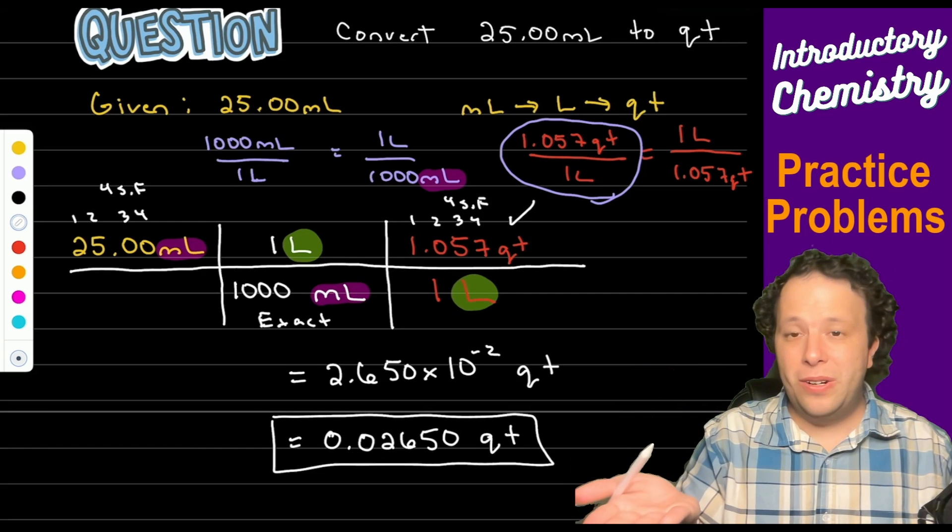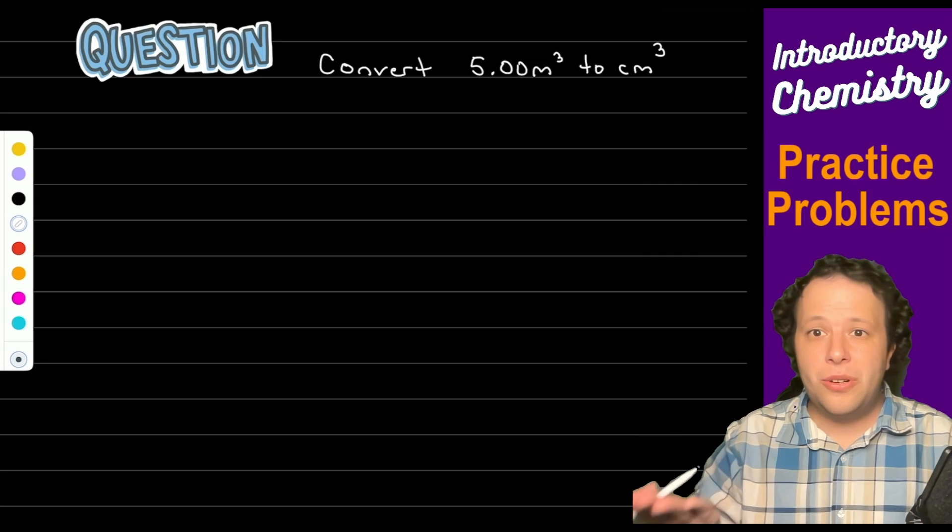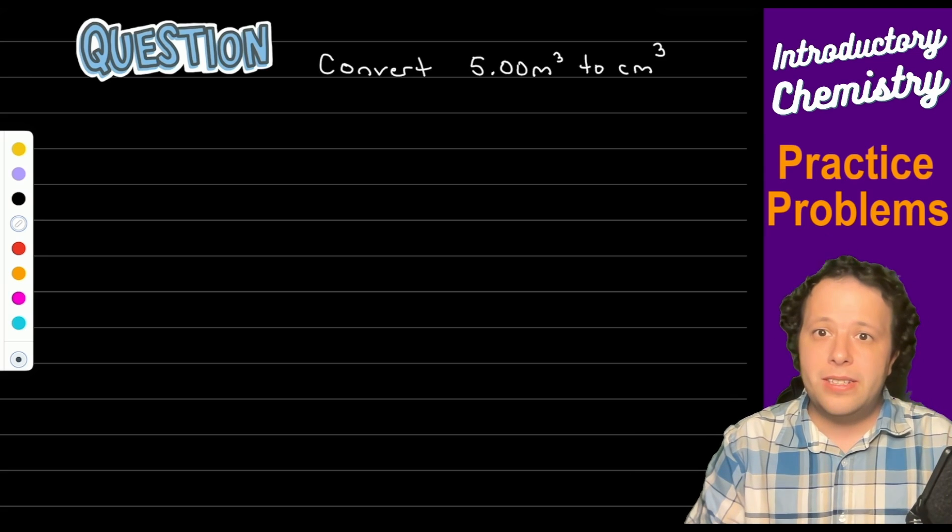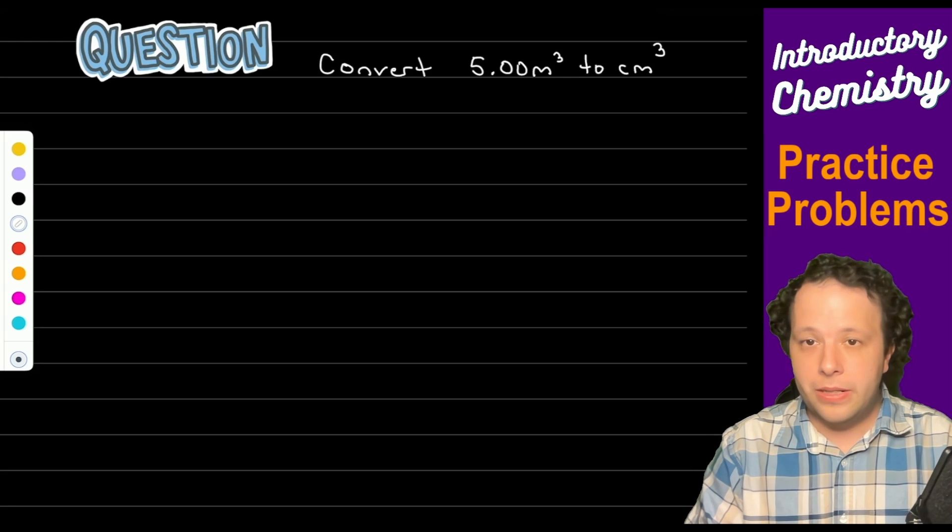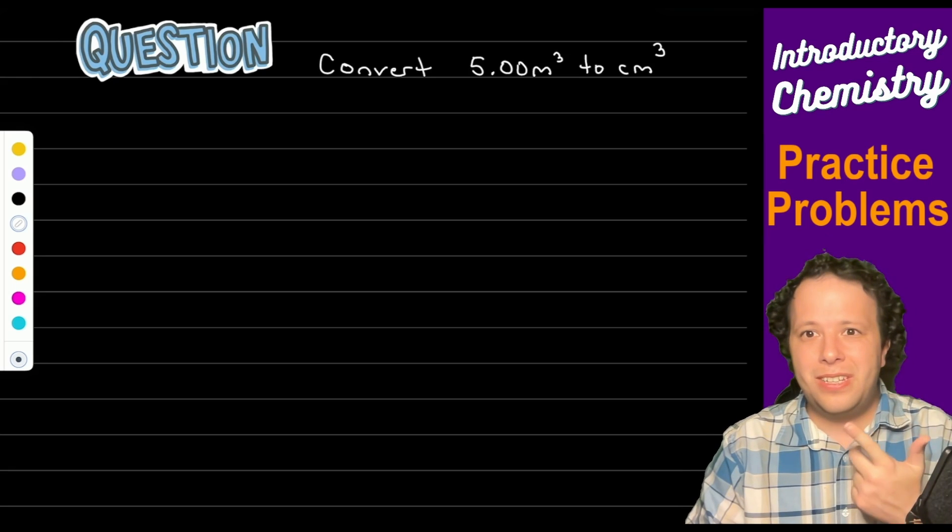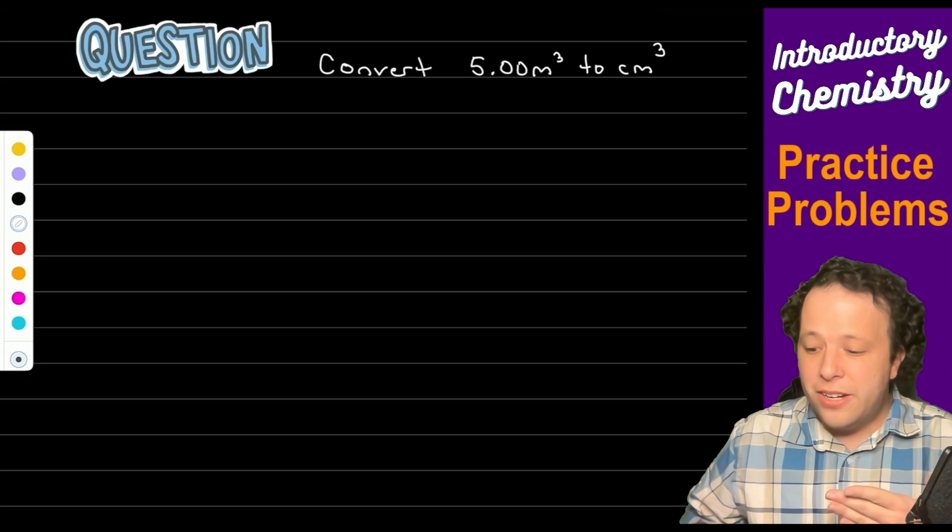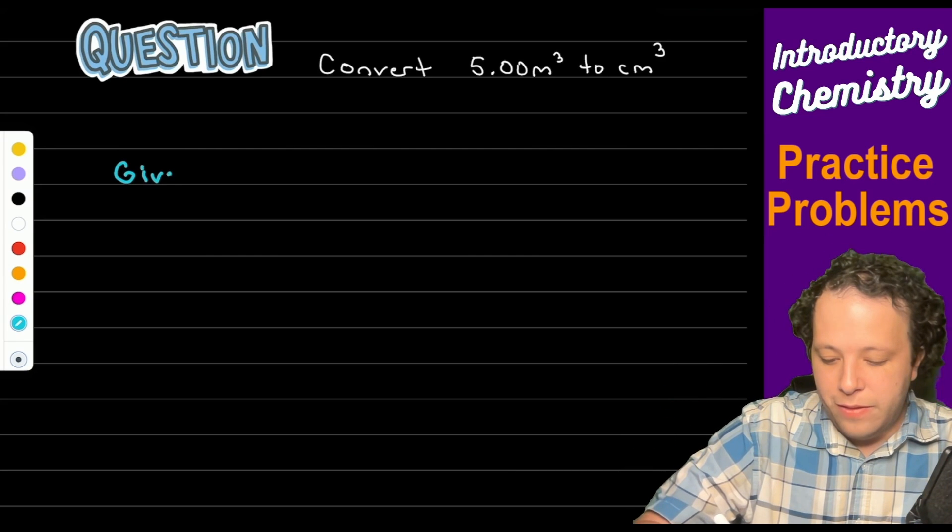For our next problem we are going to go into a cubed conversion problem which is a very common one in homework. This one's a harder one. I chose this one on purpose as our last problem because it is tough. And the whole idea of why this makes it hard is because we are dealing with cubed functions. There is no straightforward conversion between a cubed function.